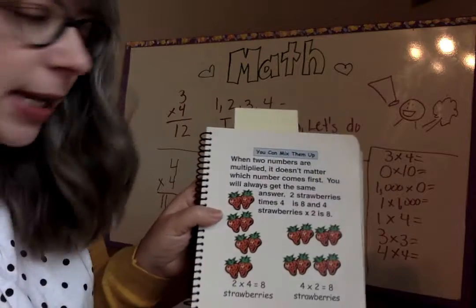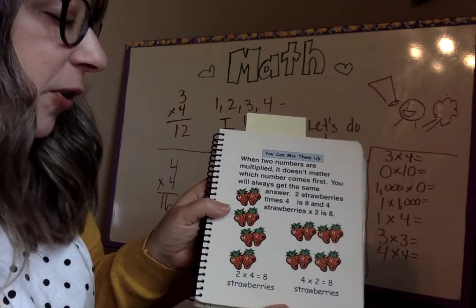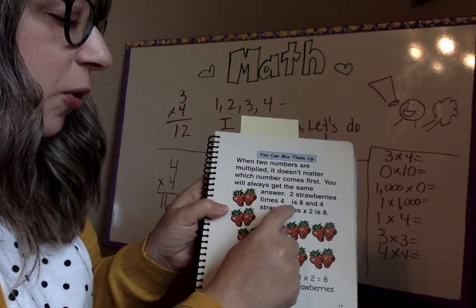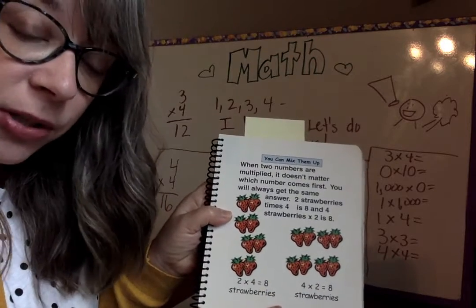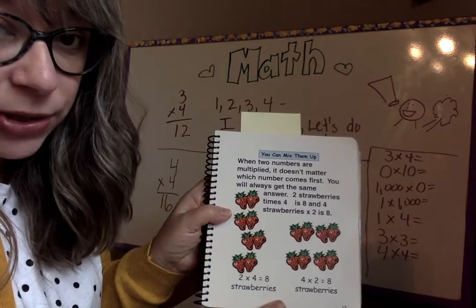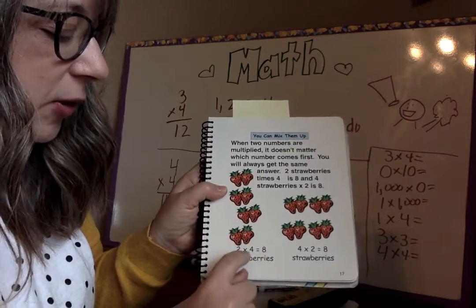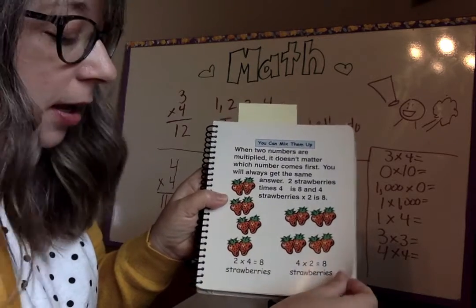But I'll read the story now. When two numbers are multiplied, it doesn't matter which number comes first. You can always get the same answer. Two strawberries times four is eight and four times two is eight. So four times two is eight and two times four is eight. That is true for any multiplication facts. So two strawberries, two times four is eight strawberries and four times two is eight strawberries.